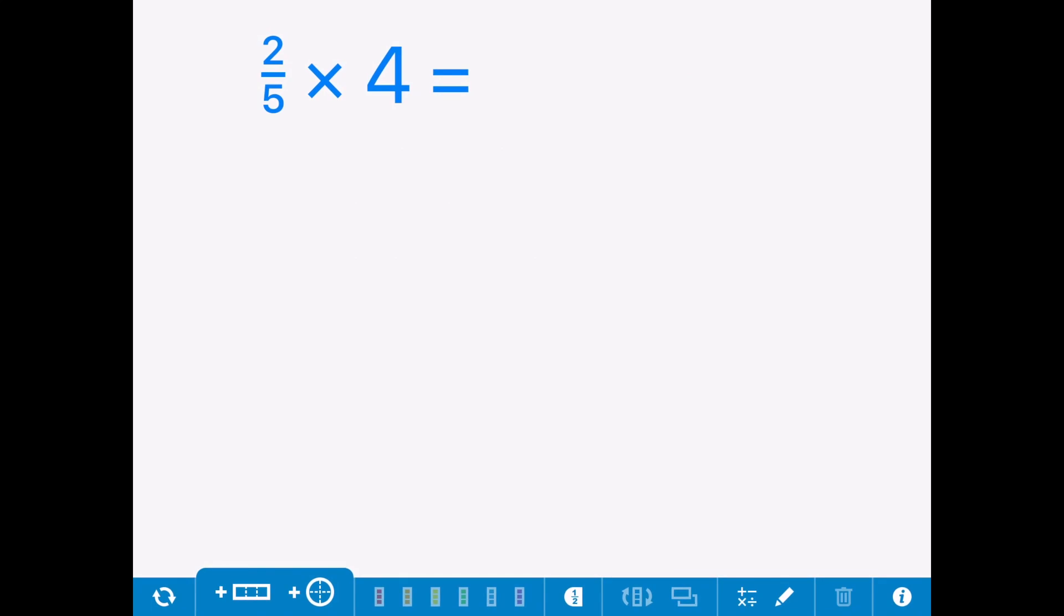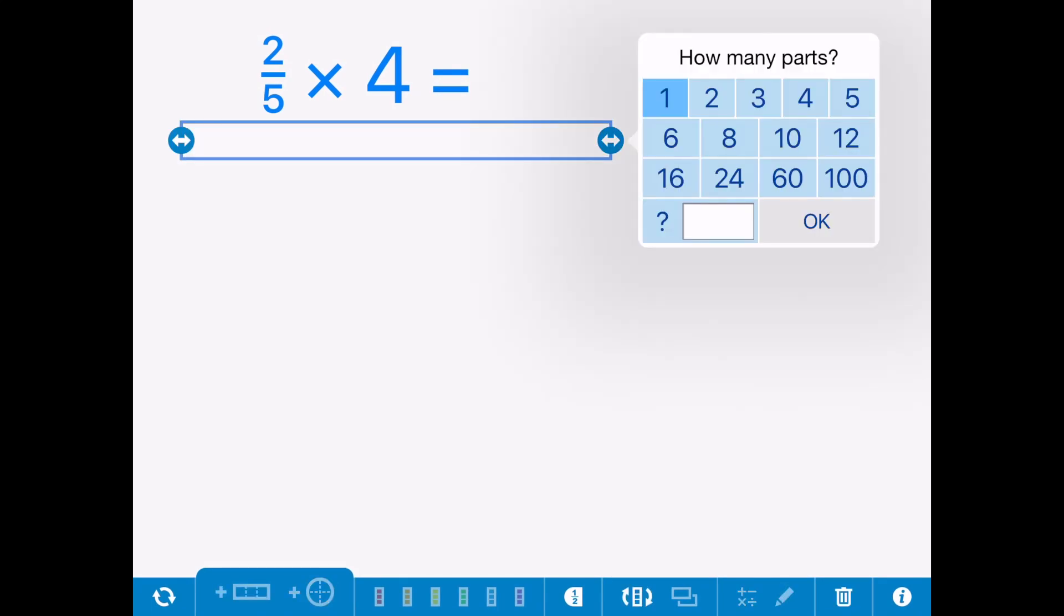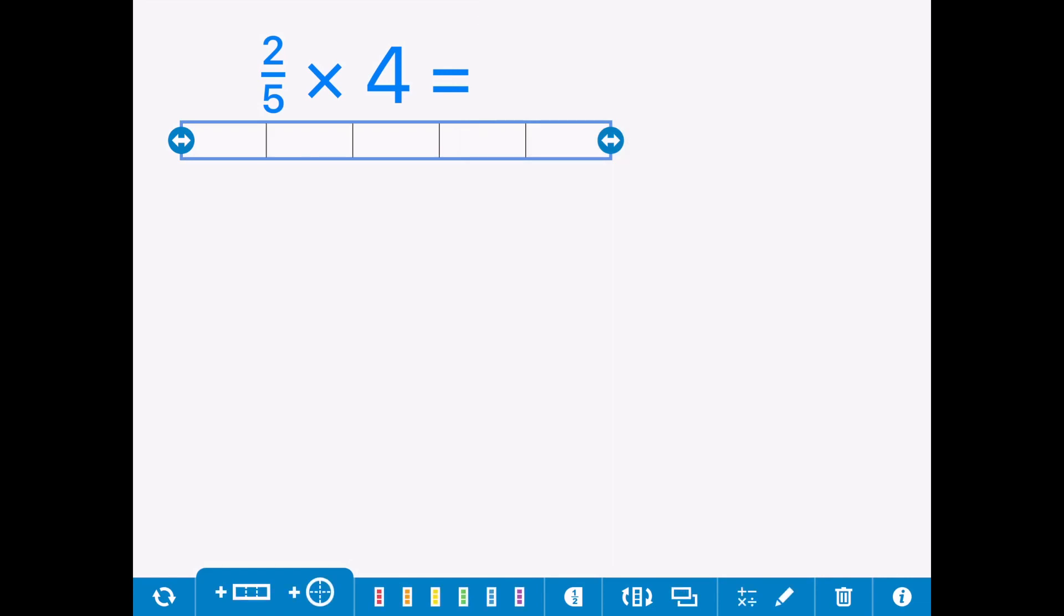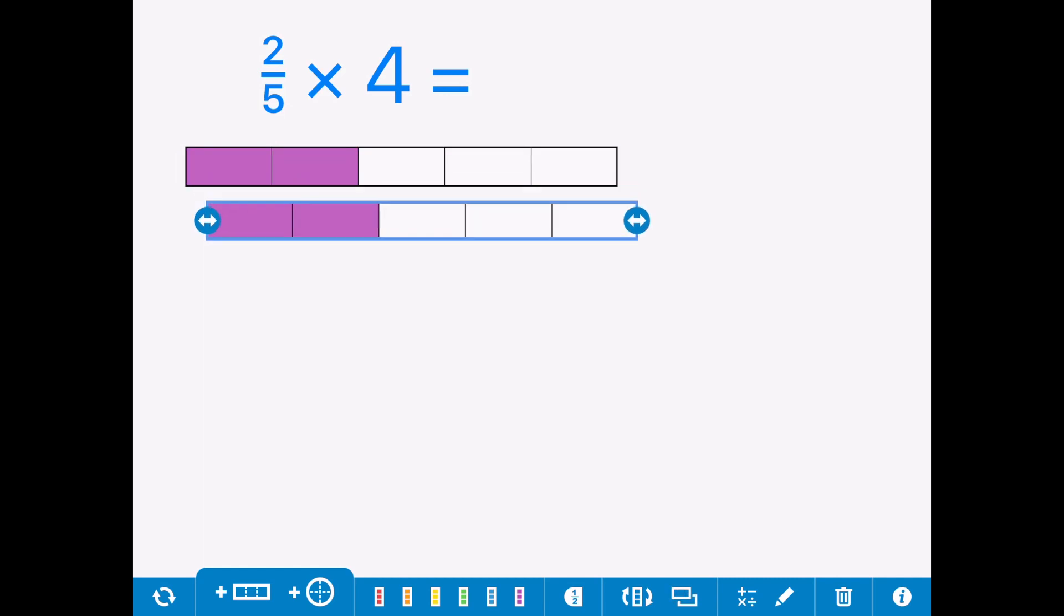Okay, so we're starting with 2/5 × 4. Let's make these fifths, that's 2/5, and let's get 4 of them.